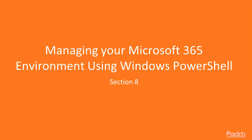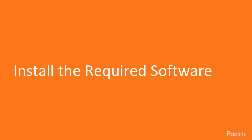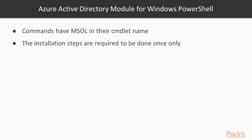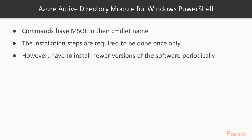We are going to manage the Microsoft 365 environment using Windows PowerShell. To correctly use PowerShell with Microsoft 365, install the required software: the Azure Active Directory Module for Windows PowerShell. The commands in this module have 'MSO' in their command names. These steps are required once on your computer, not every time you connect. However, you will likely need to install newer versions of the software periodically.